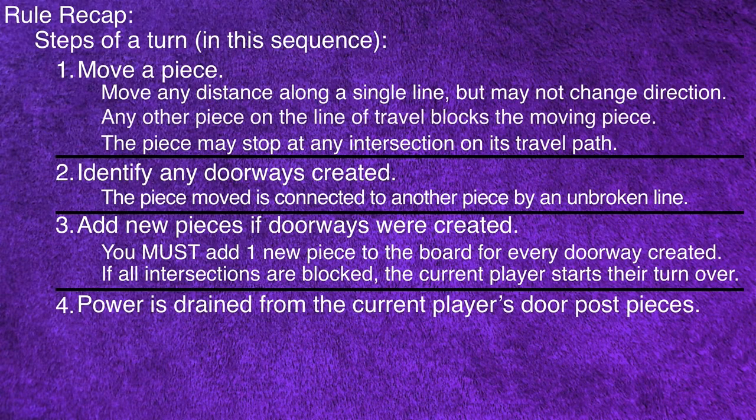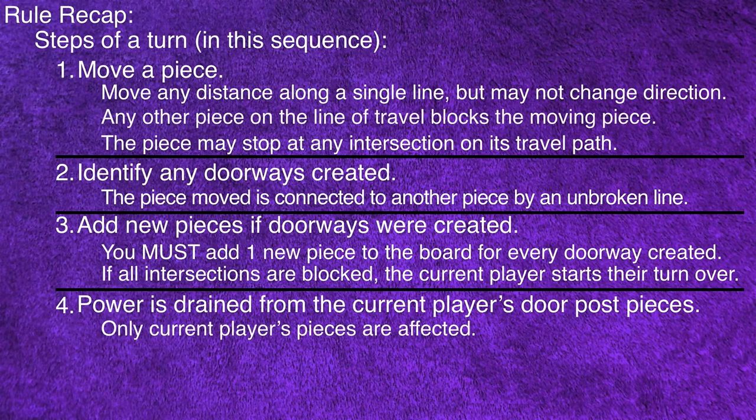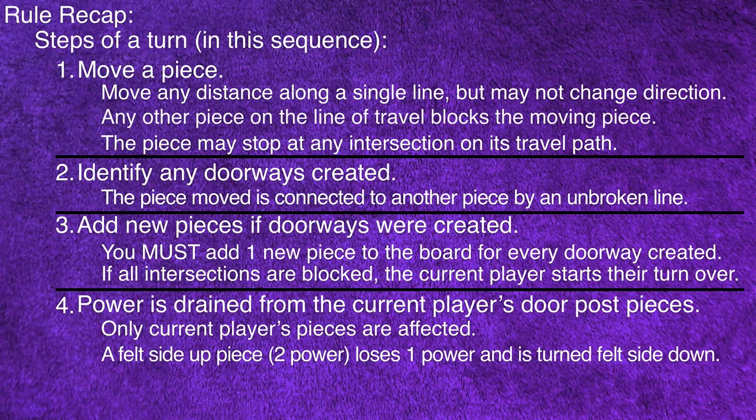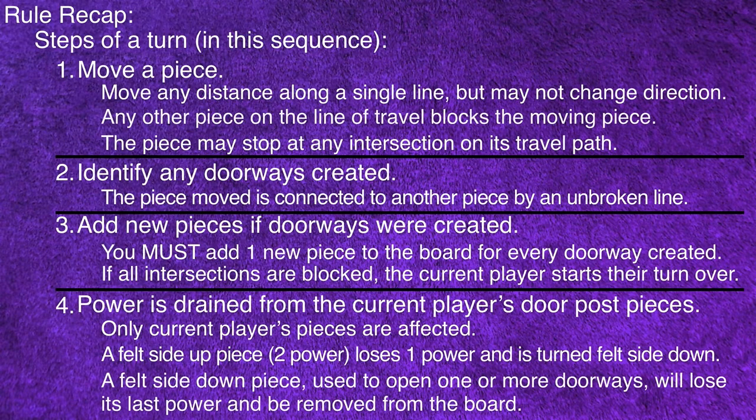When draining power from pieces, only the current player's pieces are affected. A piece with the felt side up, showing that it has two power remaining, loses one power and is turned felt side down. If a piece with the felt side down is used to open one or more doorways, the one remaining power of the piece is used. The piece is removed from the board and is placed felt side up in the queue of available pieces for use on a future turn.